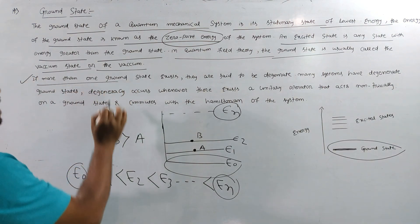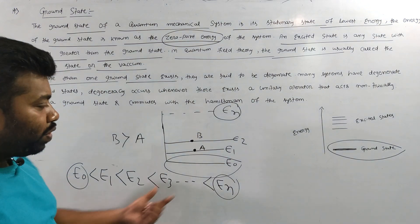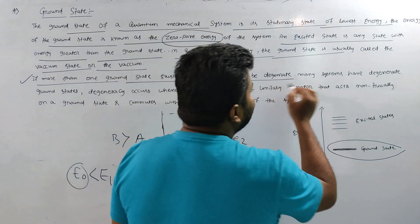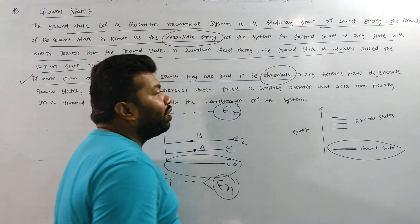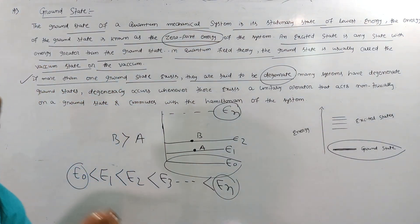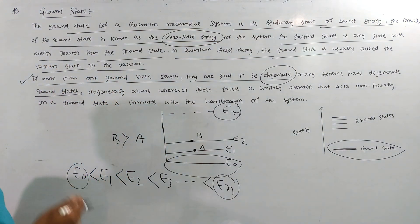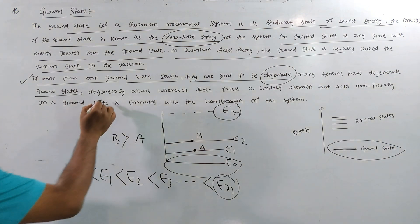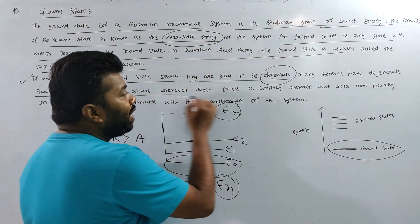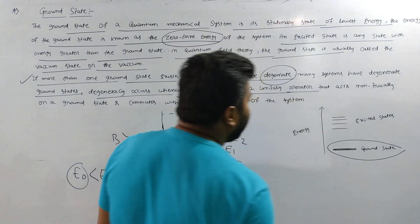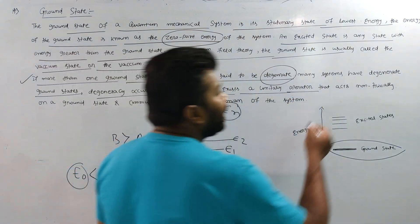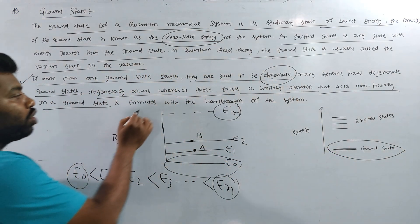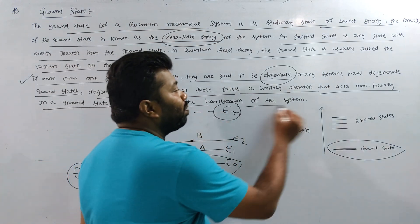If more than one ground state exists, they are said to be degenerated. Many systems have degenerate ground states. That means you have degenerated ground state. Degeneracy occurs whenever there exists a unitary operator that acts non-trivially on a ground state and commutes with the Hamiltonian system.